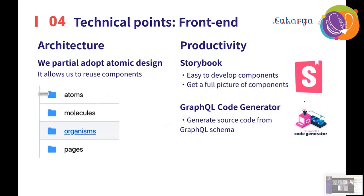Let's take a deeper look. The frontend architecture partially adapts atomic design, which allows us to reuse components. For higher productivity, we use Storybook and GraphQL code generator. Thanks to Storybook, we can easily develop components and also get a full picture of all components.